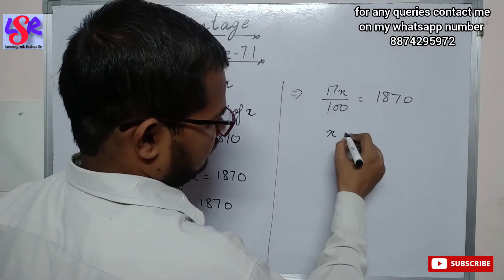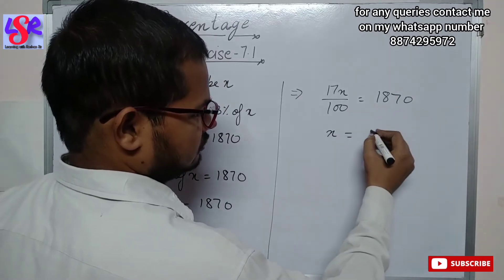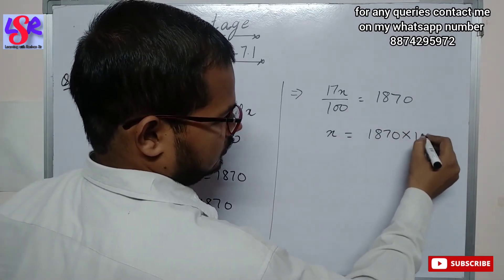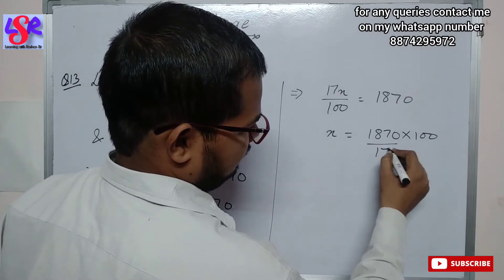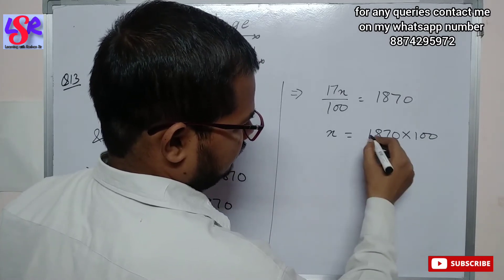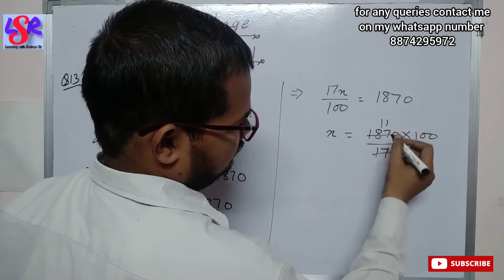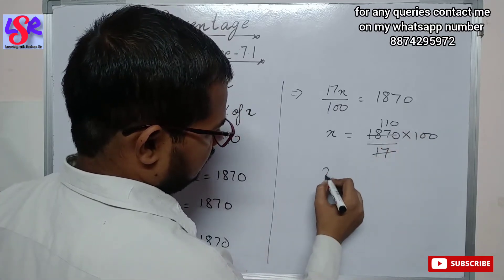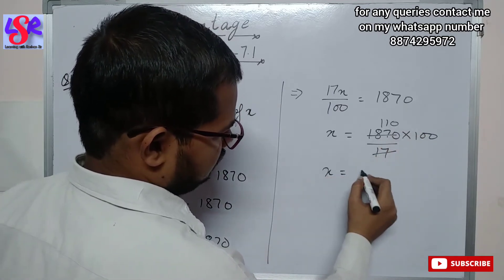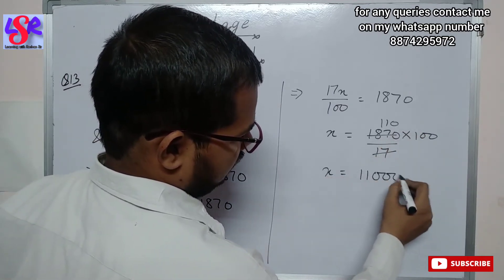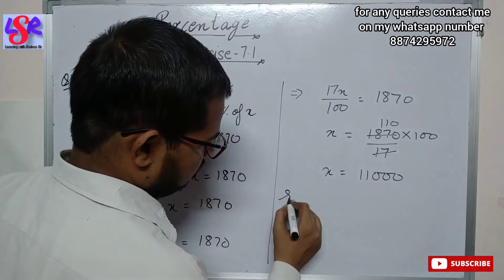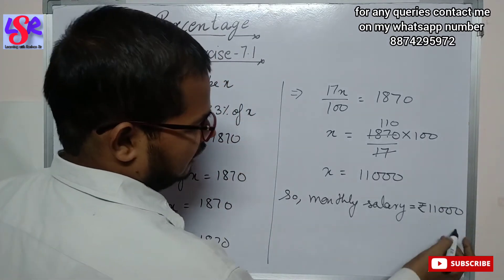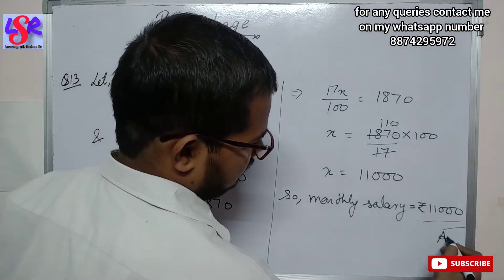To get the value of x, we transpose: x equals 1870 into 100 upon 17. Now 17 times 11 is 187, so the zeros cancel. Therefore x equals 11000. So monthly salary equals rupees 11000 as the answer.